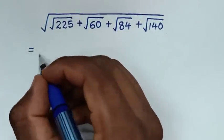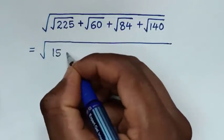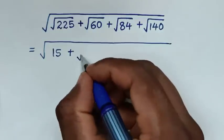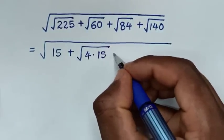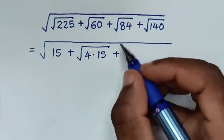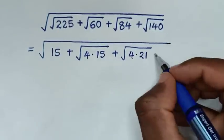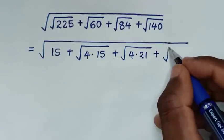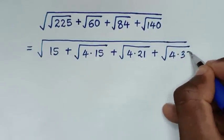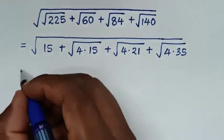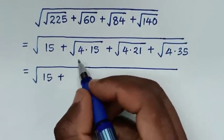This will be equal to: square root of — the square root of 225 is 15 — then plus square root of 60, which is the same as square root of 4 times 15, then plus square root of 84, which is the same as square root of 4 times 21, then plus square root of 140, which is 4 times 35.